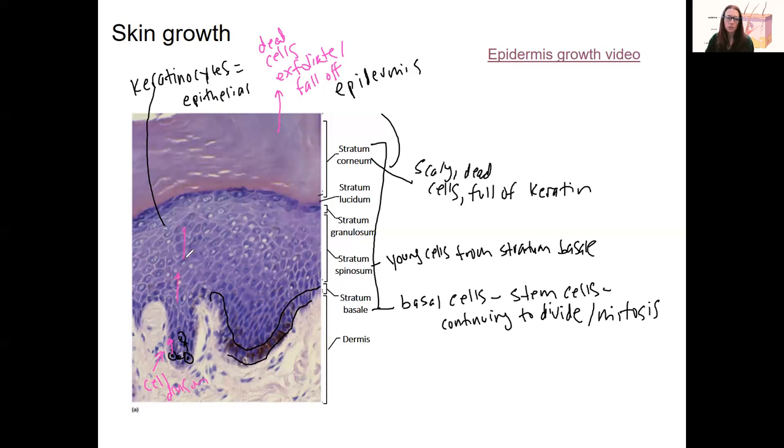That continues to push up over time until the cells enter the stratum granulosum, this dark layer right here. Granules of keratin are being produced. Here cells produce a bunch of keratin. Keratin is a protein, and this is where you can actually see it in granules. As they push up further, there's this lucidium layer that is a different form of keratin that looks clearer. That clear layer is due to how keratin looks in that layer.